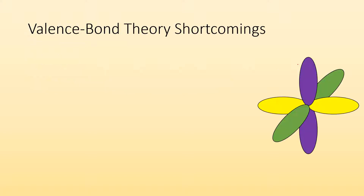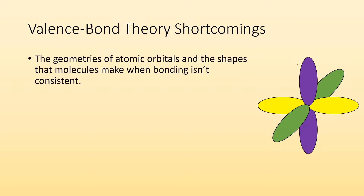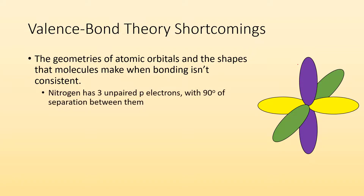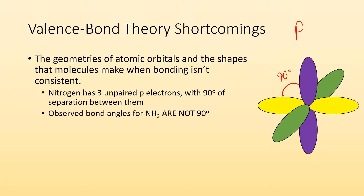Let's start by talking about the valence bond theory and its shortcomings. The geometries of atomic orbitals and the shapes that molecules make when bonding isn't consistent. If we take a look at nitrogen, it has three unpaired p electrons and they all have 90 degrees of separation between them. I have the three p orbitals here and you can see that between them there's 90 degrees of separation. So if it was just orbital overlap, you would expect the bond angles to be 90 degrees in NH3, but they're not.